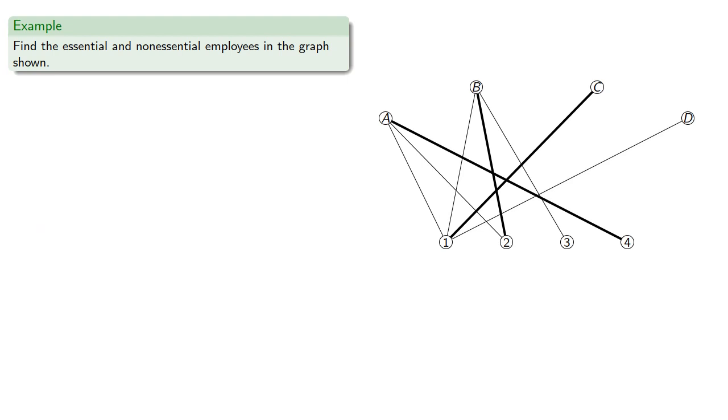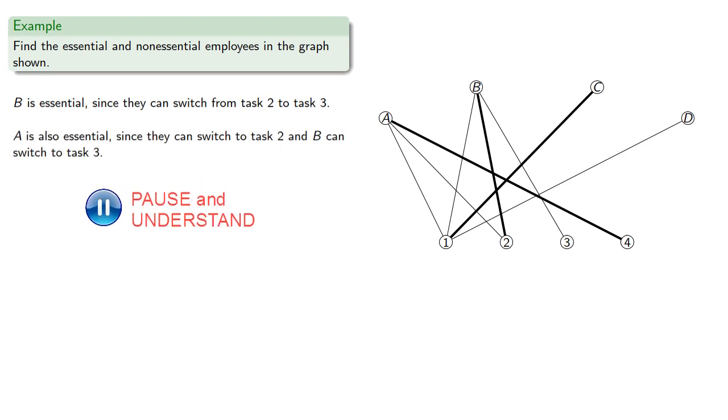And so we have our matching. B is essential since they can switch from task 2 to task 3. Now A is also essential since they can switch to task 2 and B can switch to task 3. Meanwhile C and D are non-essential, either can perform task 1.